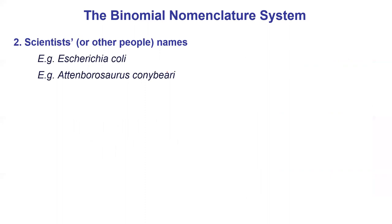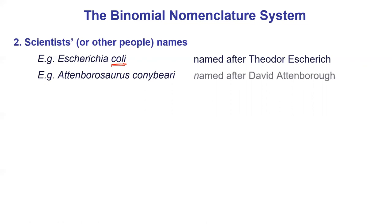Escherichia coli is an organism we are going to be looking at in the lab. It was named after a pediatrician, Theodore Escherich, so named after a person in this case. Coli means colon — that's your large intestine — but it's found in both large and small intestines.